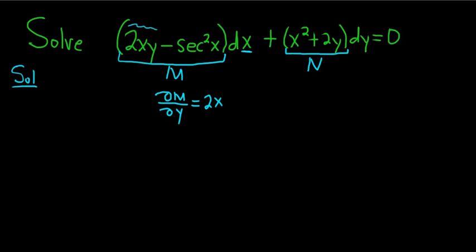Now we have to compute del N del x — it's the other letter. There's a y here, so we do x. Just a really cool trick. The derivative of x squared is 2x. This is the partial derivative of N with respect to x, so we're treating all of the y's as constants. The derivative of 2y is 0 in this case.